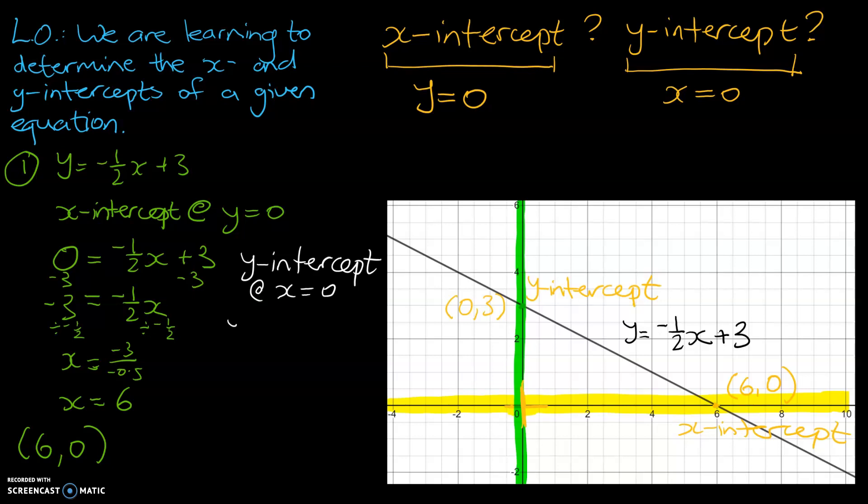So we've got y is equal to negative one-half of x plus 3. That's our original equation. Where that x is, we're going to take that x away and put in our 0. So y is equal to negative one-half times 0 plus 3.